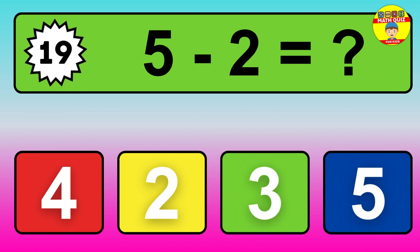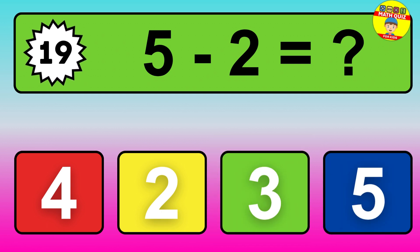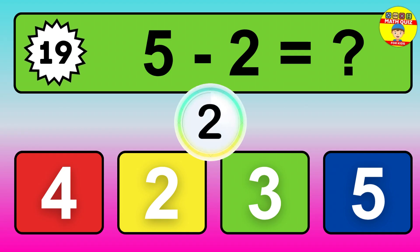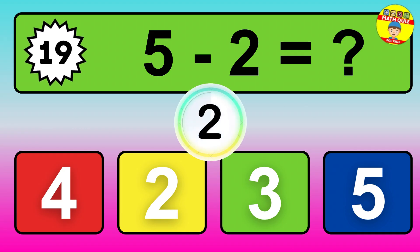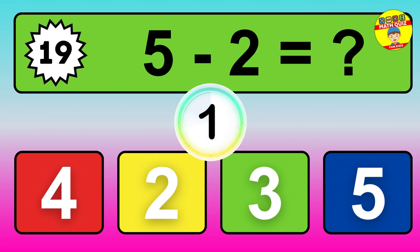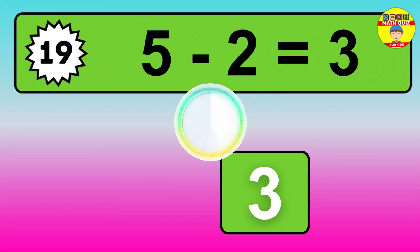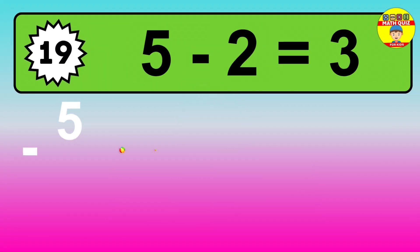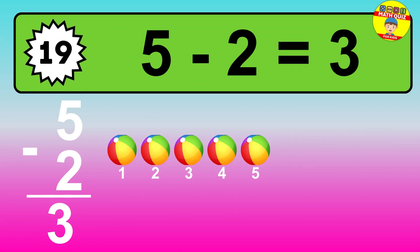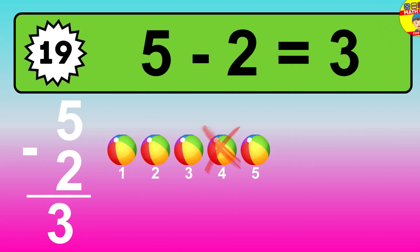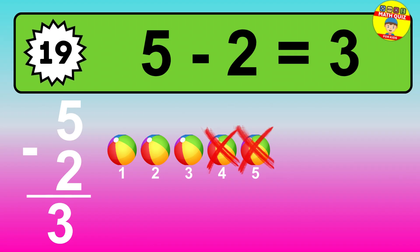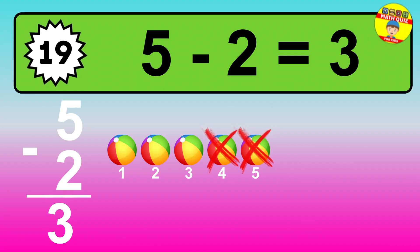Question 19: 5 minus 2 equals what? The answer is: 5 minus 2 is 3. Let's count it: 1, 2, 3.